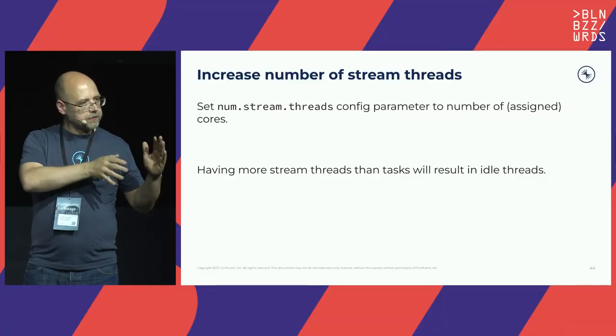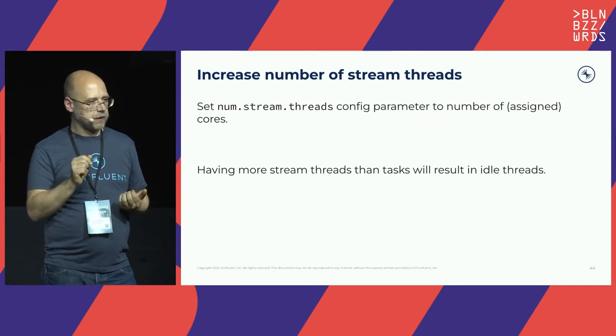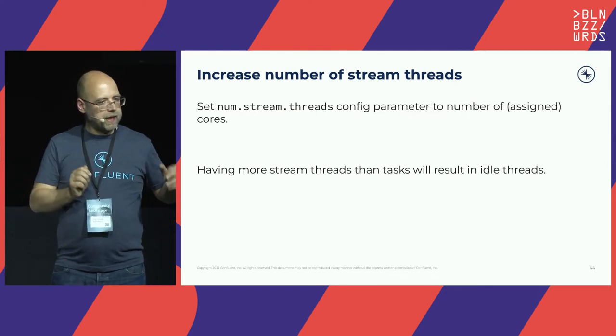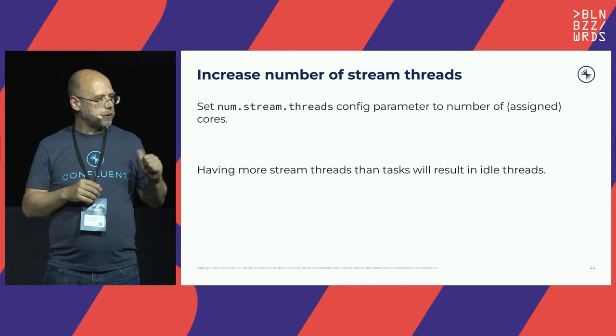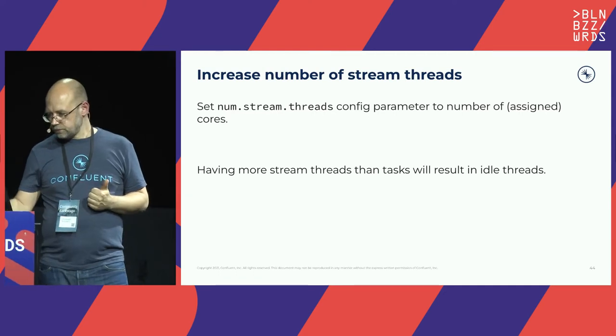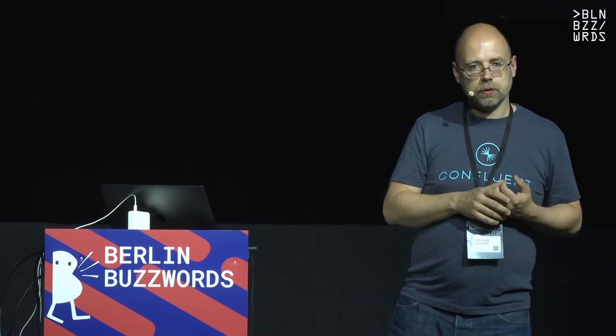Another important config is num.stream.threads — the default is 1. If you run Kafka Streams on a large VM with 12 cores you'll only use one core. Set this to match your number of cores, being careful not to create more threads than tasks, which would leave threads idle.